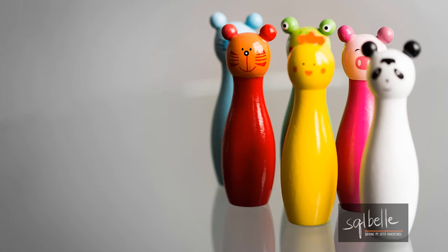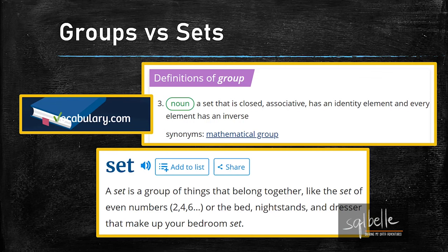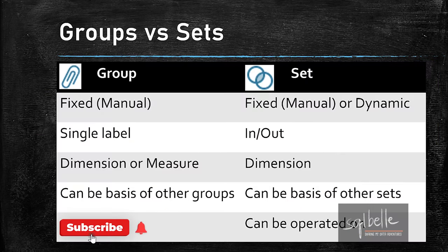If you've been watching my videos, you'd know I like consulting the dictionary — it helps me understand what certain terminologies may mean. I went to vocabulary.com and interestingly, the definition of a group uses the word 'set,' and the definition of a set uses the word 'group.' So I think we can conclude they are very similar. But as far as Tableau is concerned, groups and sets have distinct differences and uses.